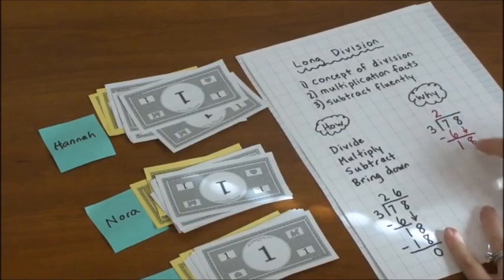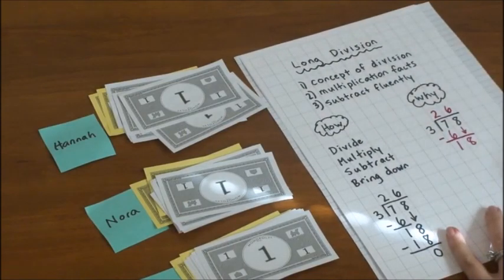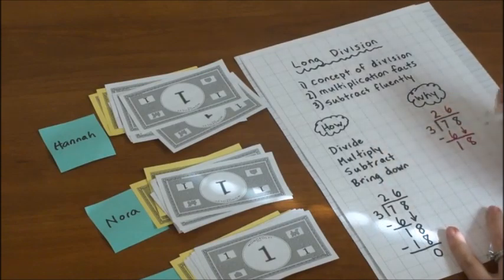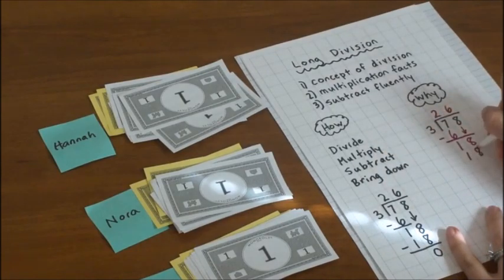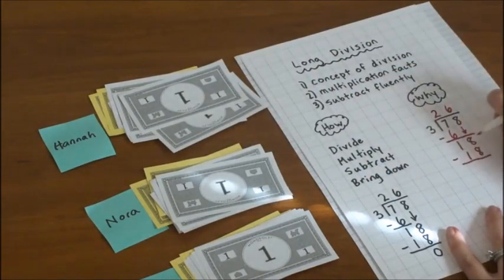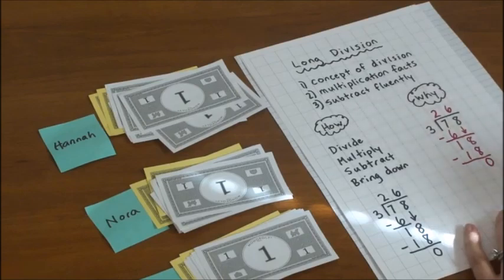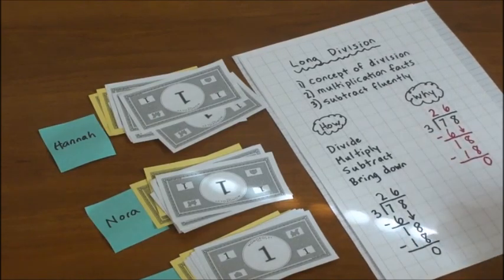And then 6 here for Aiden. So let's write down what we did. So first we divided. 18 divided by 3 equals 6 ones for each child. Multiply. 6 times 3 equals 18. That's the total number of ones that we gave out here. We subtract. 18 minus 18 equals 0. And there's nothing left to bring down. We've distributed all of the money. And there are no dollars left over.